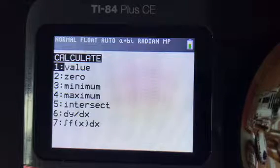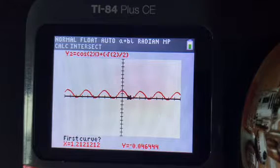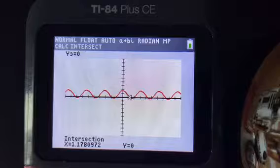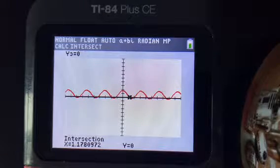So if you were to go to the other side of the graph and get to the first intersection with the 0 just like you did last time, click enter 3 times you'll get positive 1.178.